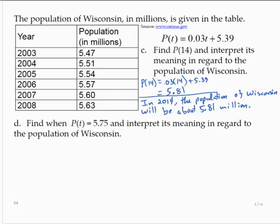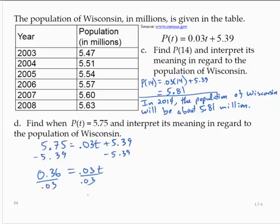Part d, find when P(t) equals 5.75 and interpret its meaning in regard to the population of Wisconsin. So here we want to find when will the population be equal to 5.75. So we would set 5.75 equal to 0.03t plus 5.39 and solve the equation for t. So I'll subtract the 5.39 from both sides. So 5.75 minus 5.39, 0.36 equals 0.03t, and dividing by 0.03, t is 12.